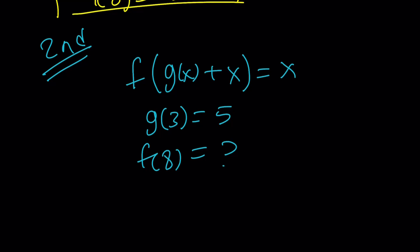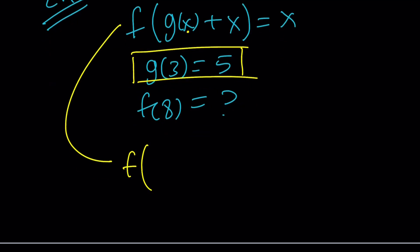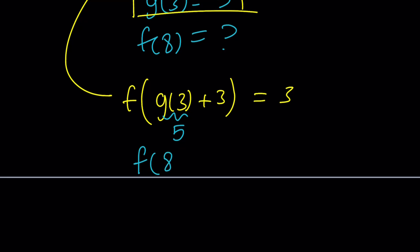Well, think about it. Think simple. Since we were given g(3), why not replace x with 3 everywhere? Let's do it. That gives us f(g(3) + 3) = 3. We also know that g(3) = 5. And please don't hate me for this. That gives us f(8) = 3, which is what we were looking for.